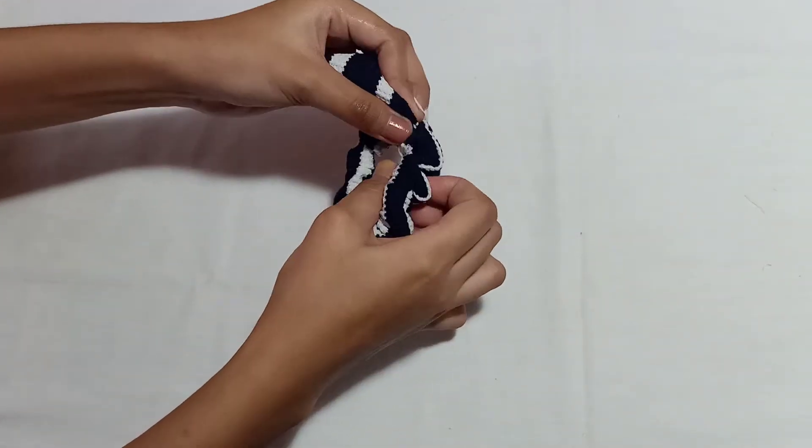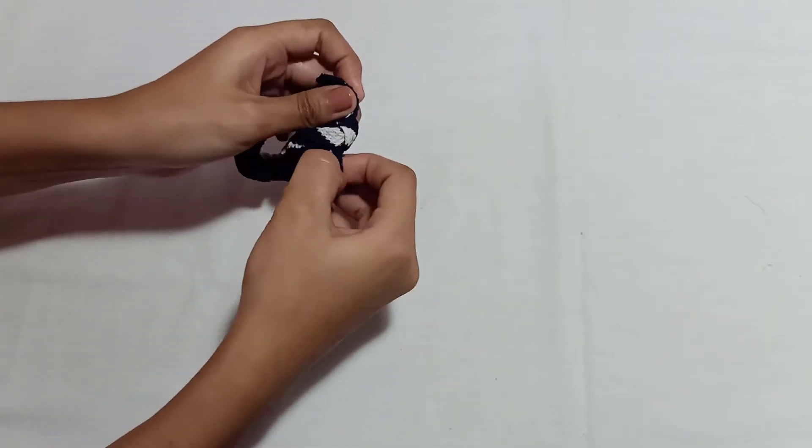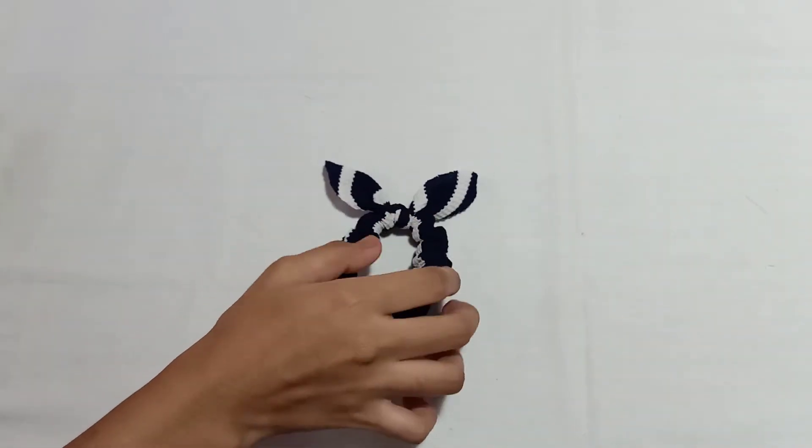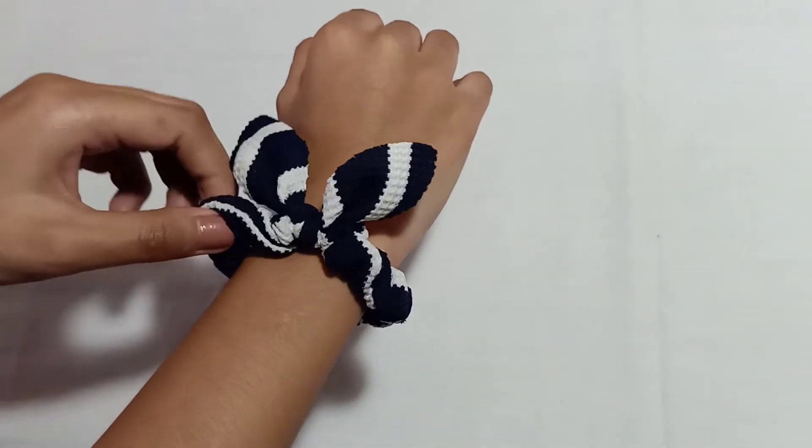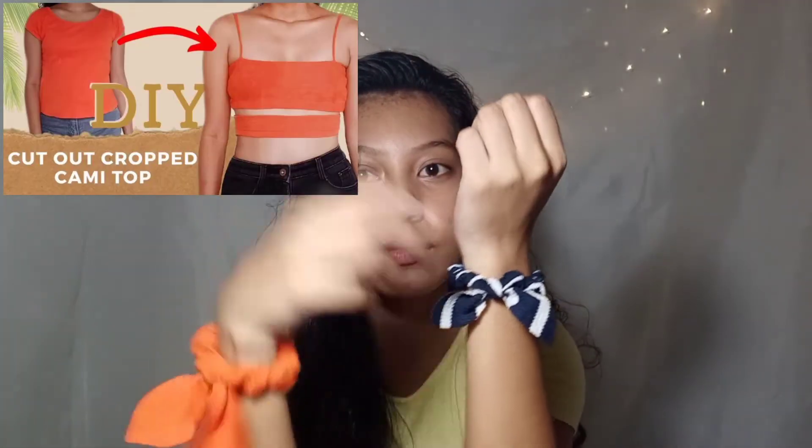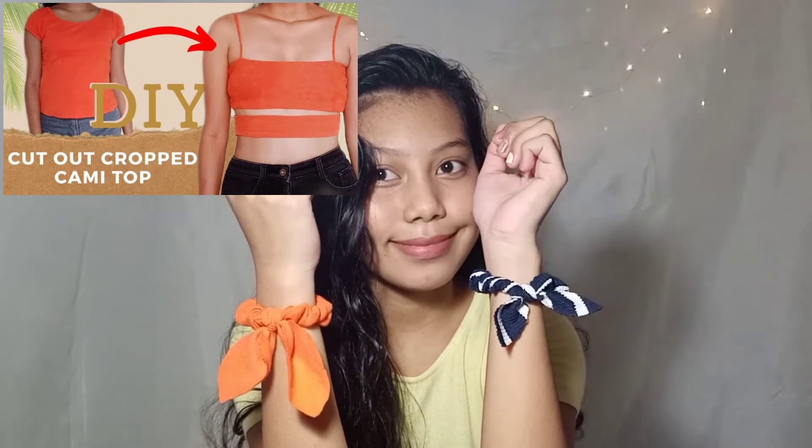After making the shape we want, I'll attach it to the scrunchie. For making the scrunchie, I mentioned that earlier, so you should know how to do it. I just tied it. Here's the finished product. I also made an orange one, which I'll model later. This orange scrunchie is from the scrap of the cut-out crop top from my vlog, so check that out too.